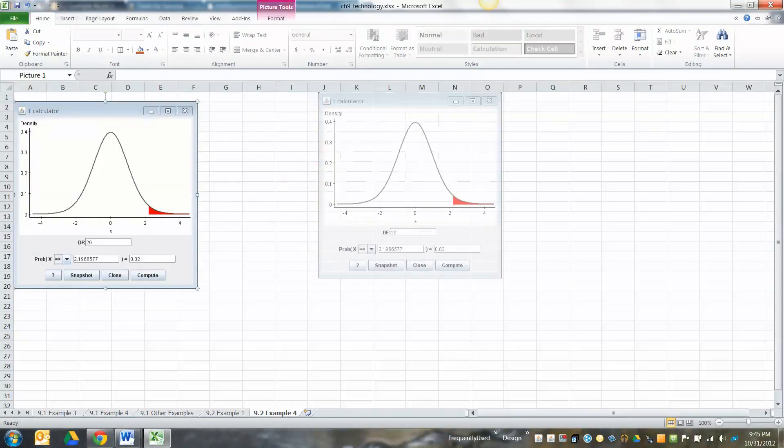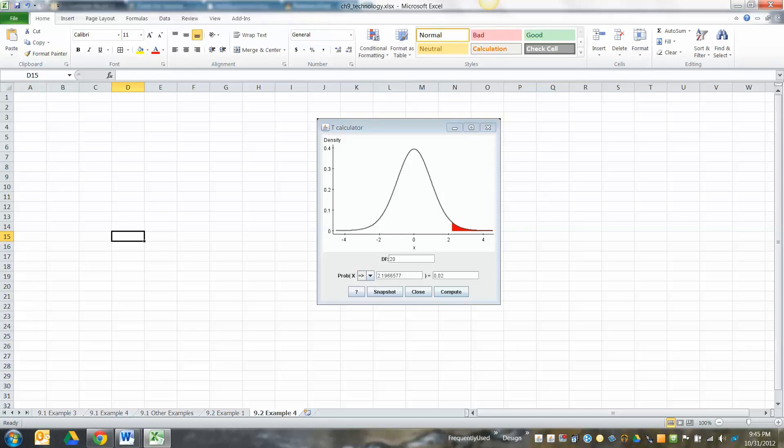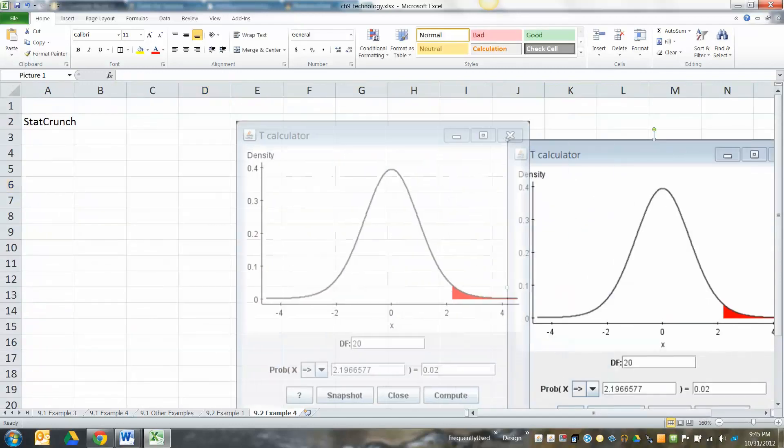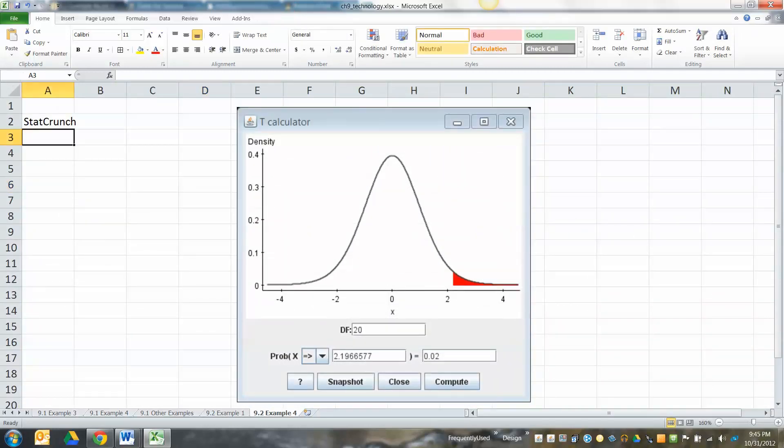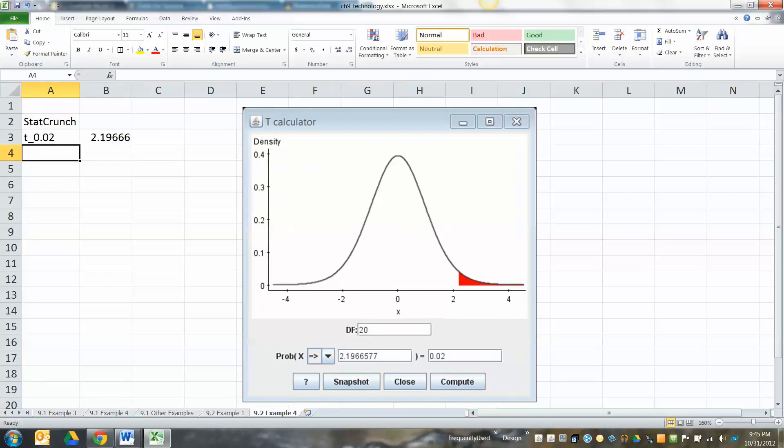There we go, so I've got it right here. I'll use that picture later. That's StatCrunch finding it. Let's find it with Excel. StatCrunch claims that the t-value would be equal to t.02 would be equal to 2.19665777.